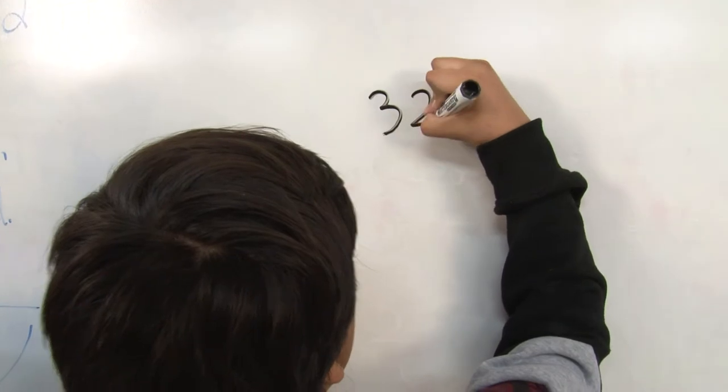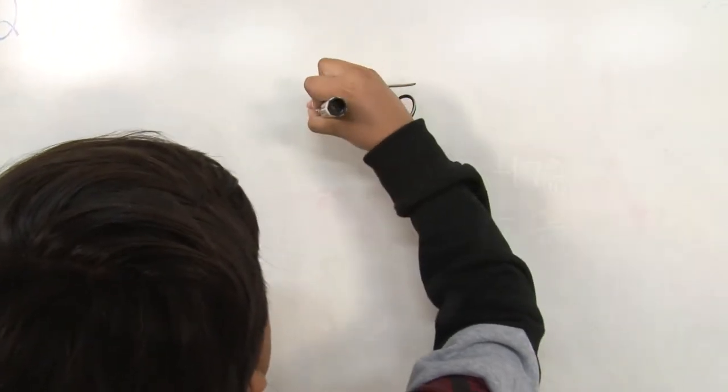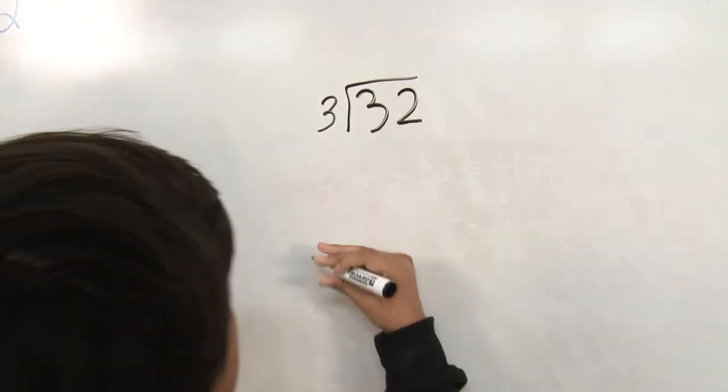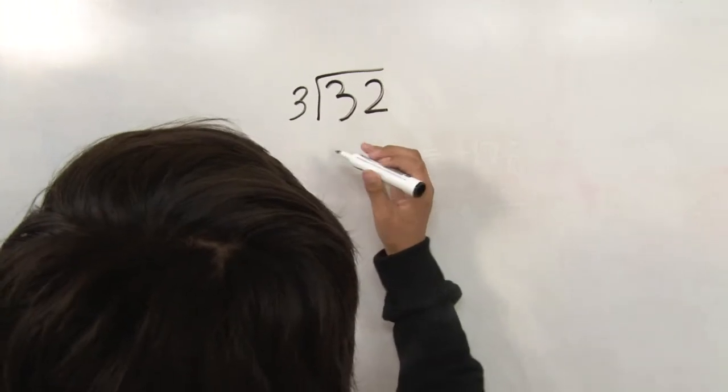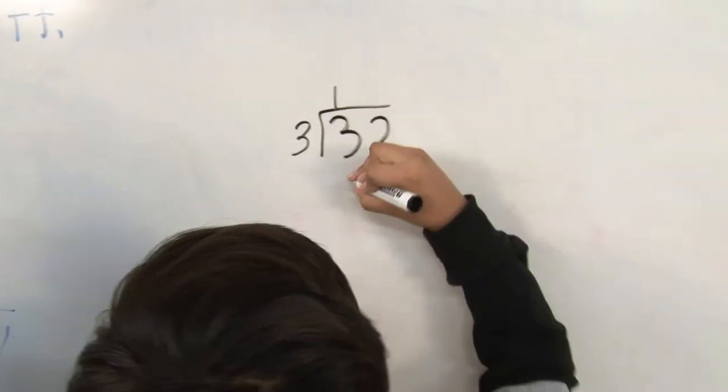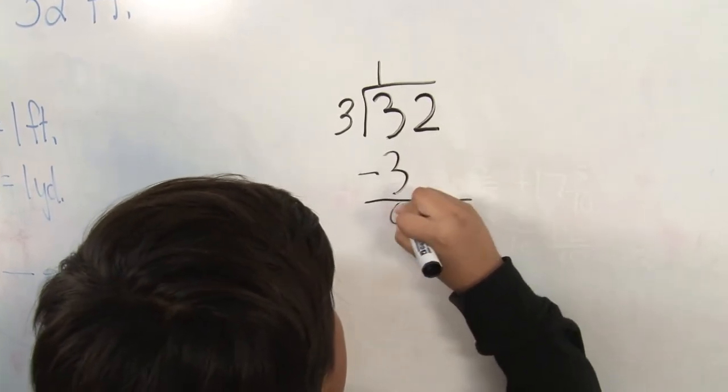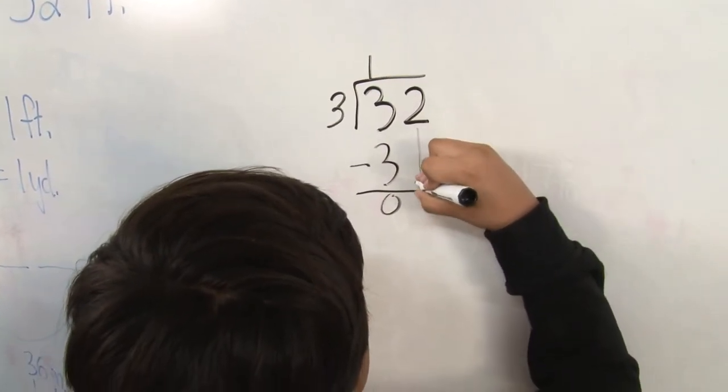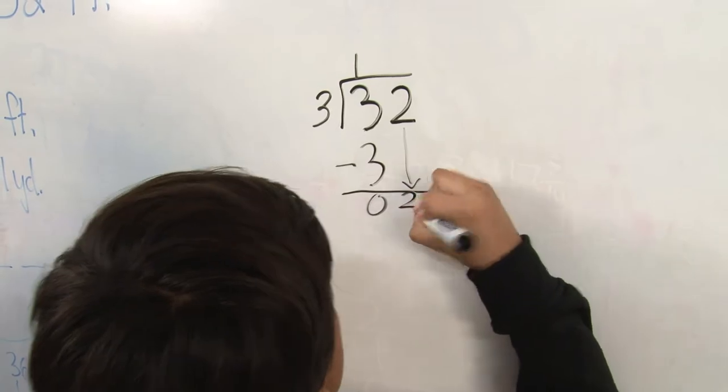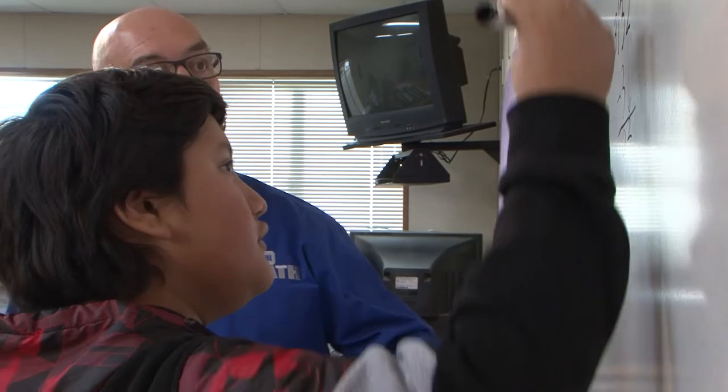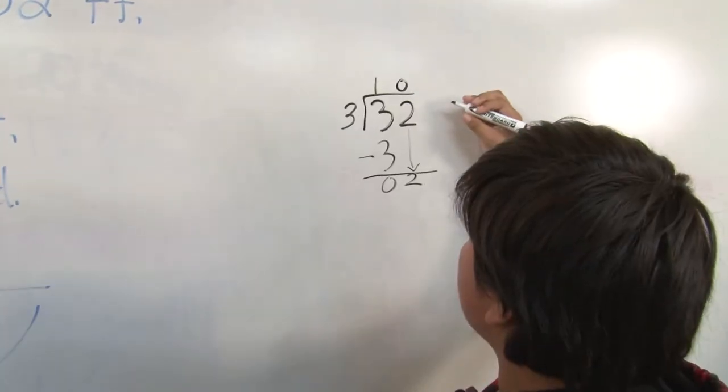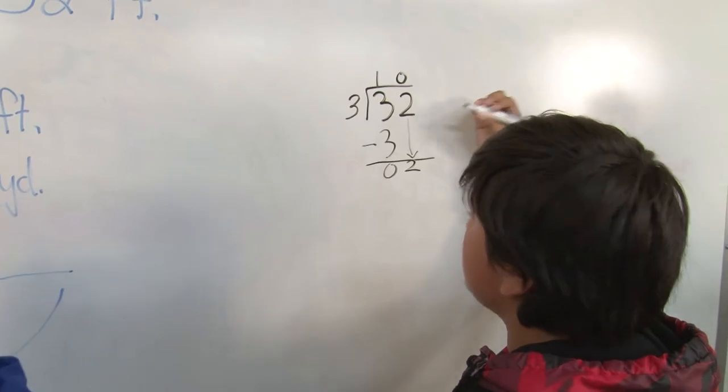There we go. Now it's coming out dark. So of course, three goes into three one time. Then we bring down the two. And of course, three is bigger than two, so we can't go into it. So we'll put a zero on top right for that placeholder. Good. So it'll be remainder two.